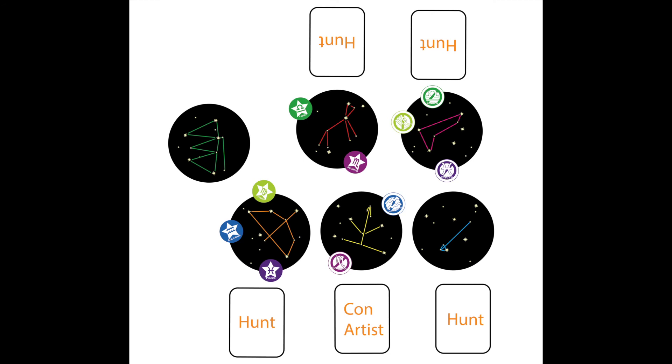Only players who correctly vote the Con Artist receive a point. The player who gets the most best of show votes will also receive one point. Additionally, if the Con Artist does not get the most votes, then both the head astronomer and the Con Artist receive two points each.